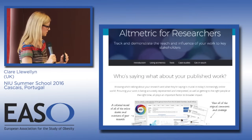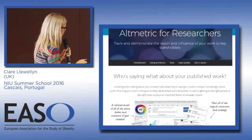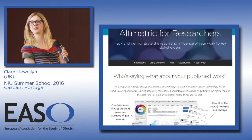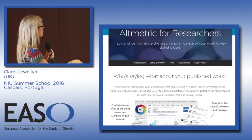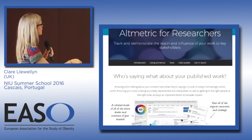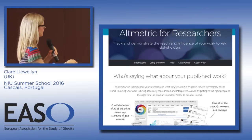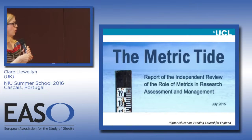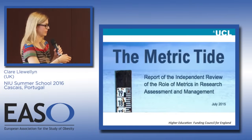This is the altmetrics website. The colors represent different sorts of outlets that have cited your paper. When you search your paper and it comes up, quite often universities have now linked this so it will sit next to the paper and you can go in and have a look.